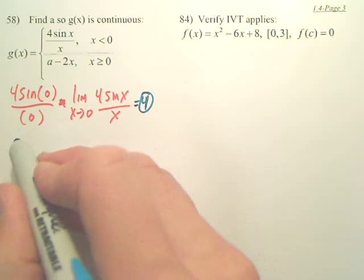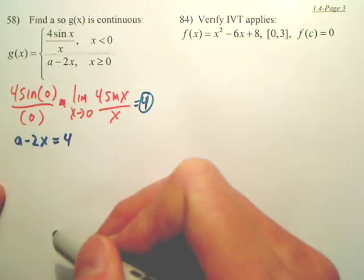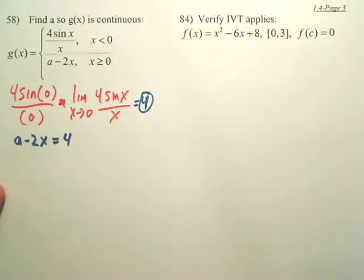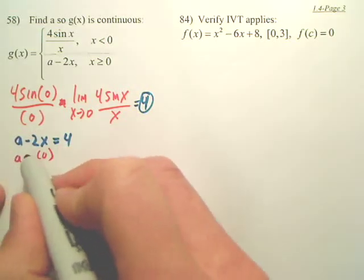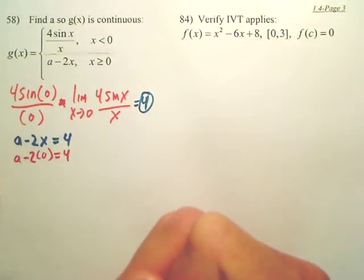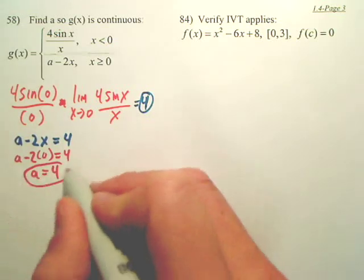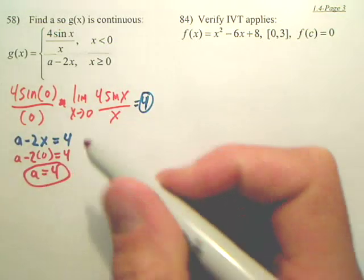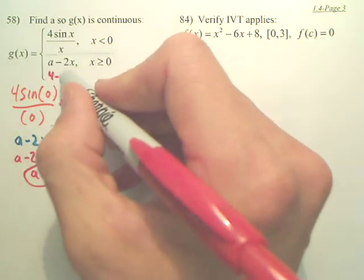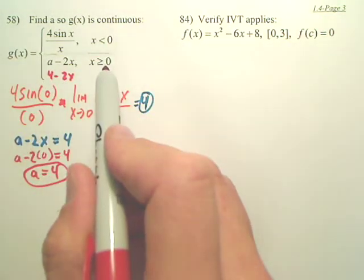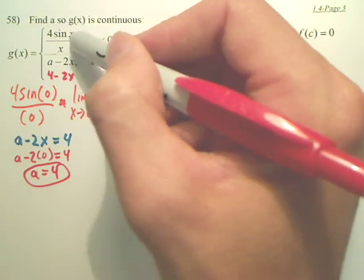So do you understand that this bottom graph, a minus 2x, shouldn't that equal four here? Shouldn't it equal four when x is zero? Can I find 'a'? What's two times zero? Zero. So when a equals four, these two graphs will hit. Meaning, if I replace this with four minus 2x and plug in zero, what do you get? You get four. And if this is four, shouldn't this be four? Don't they meet?